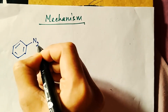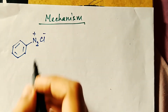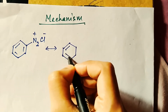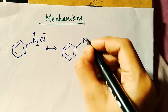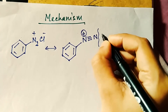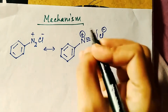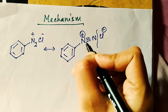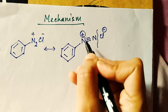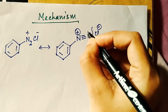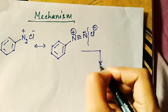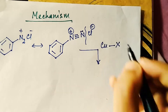The first reactant is the diazonium salt. Let me draw its structure: the benzene ring with N2Cl, shown as N2-plus and Cl-minus. We can also write this structure with a triple bond and a plus sign on nitrogen, with Cl-minus. The nitrogen carries a positive charge because nitrogen's valency is three but here it has made four bonds, so the plus is on nitrogen. A lone pair is present on this nitrogen. Now we have copper salt CuX.